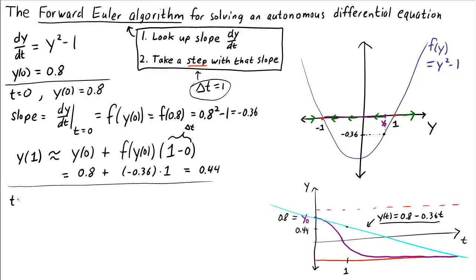Now we're at time equals 1, and we need to look up a new slope. The slope is the derivative at time equals 1, which is f(y(1)), and our approximation of y(1) is 0.44. On our plot of f versus y, imagine we're right here at y(1) equals 0.44, and we need to look up our slope. Our new slope is 0.44 squared minus 1, which is negative 0.8064.